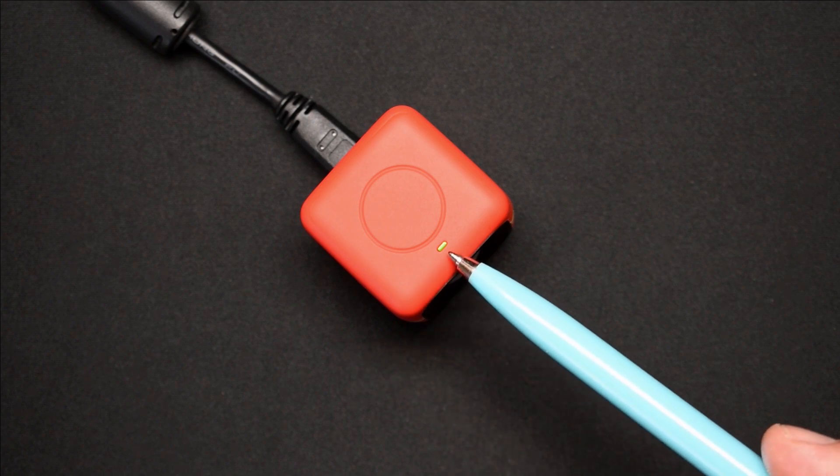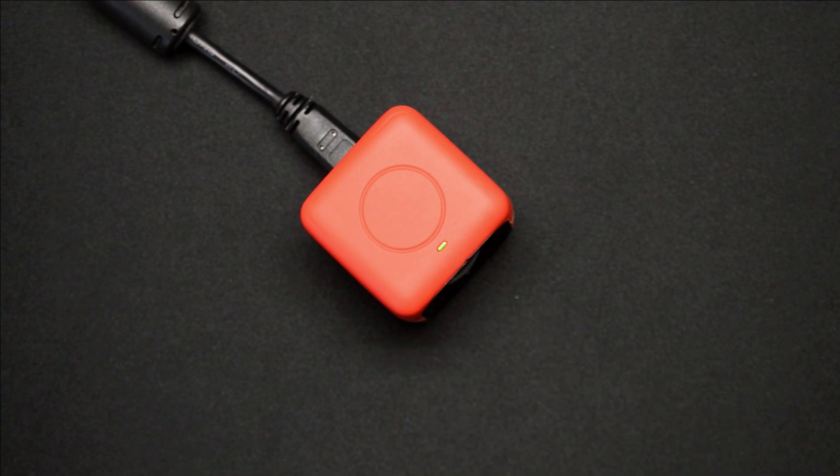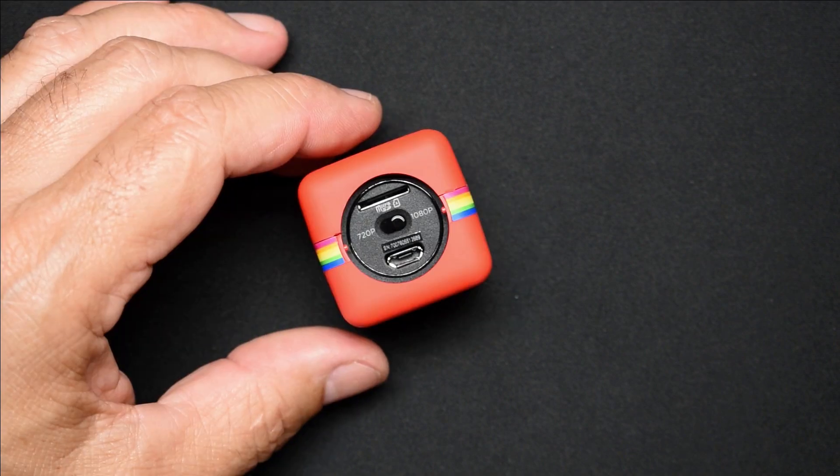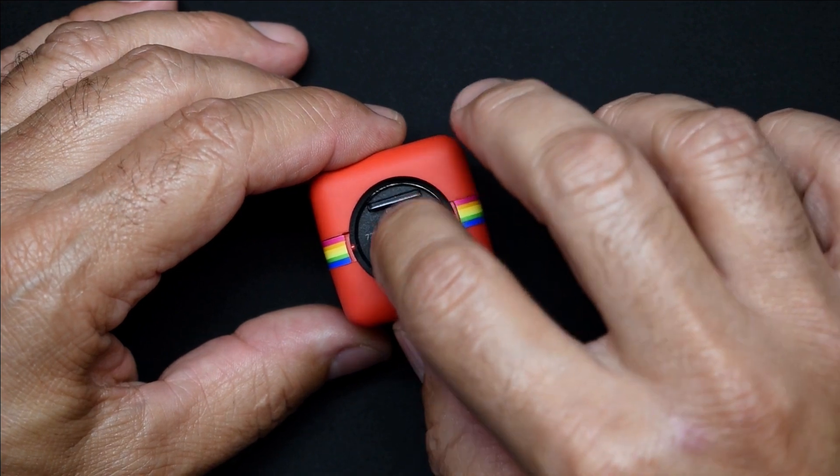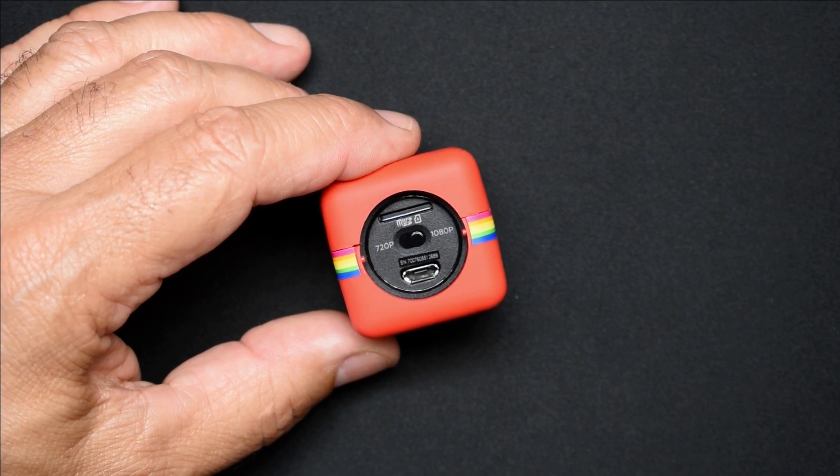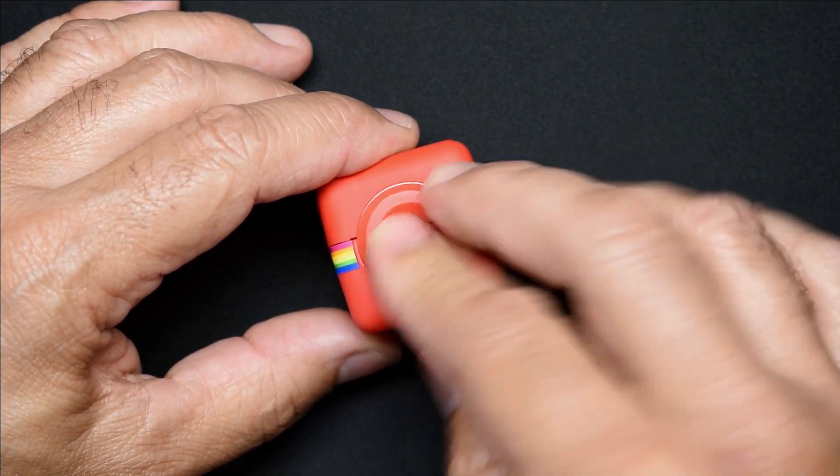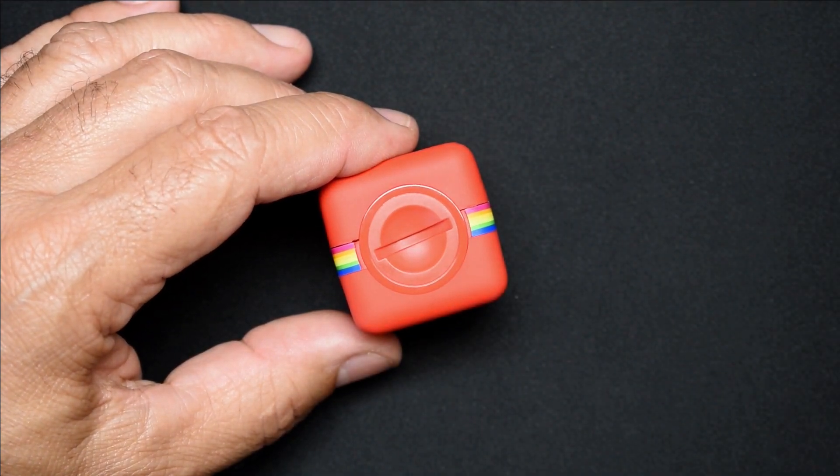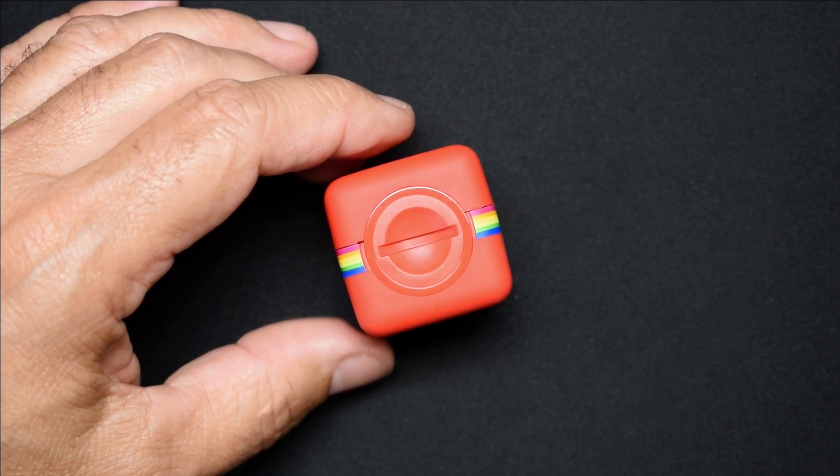As you can see, the green LED is now on. That means the battery is fully charged. Now let me install the SD Micro. It's on 1080p. Put this back in there. Rotate this clockwise.